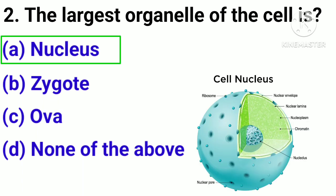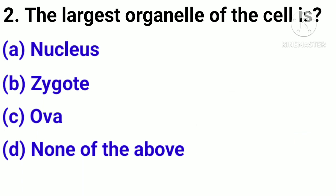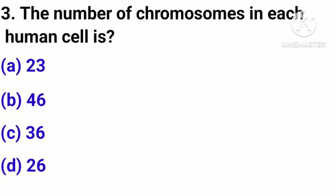Correct answer: option A, Nucleus. Question number 3. The number of chromosomes in each human cell is: option A, 23; option B, 46; option C, 36; option D, 26.